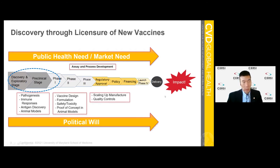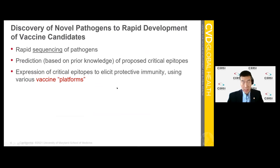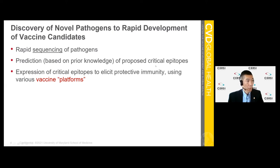This really paints the image of needing to rapidly go through a stage of discovery and developing vaccines and therapeutics at remarkable speed to respond to the next pandemic. What I'm concentrating on is this discovery preclinical stage — my argument is that we need a number of platform technologies to be able to respond quickly. We have rapid sequencing of pathogens once we identify them, and prediction tools to help us understand the critical epitopes and antigens of interest, and we use various vaccine platforms to express these critical epitopes and elicit protective immunity as soon as possible.